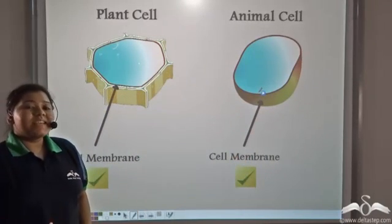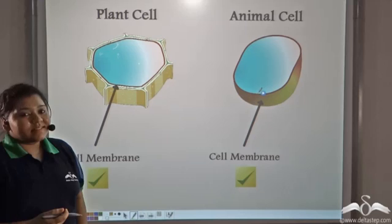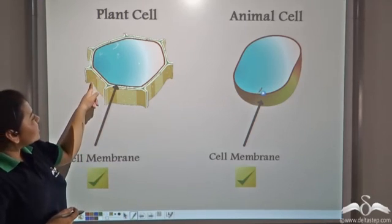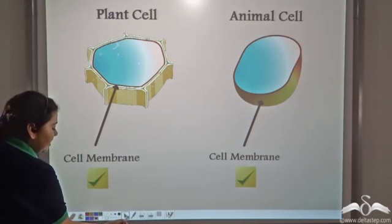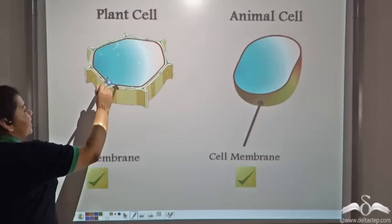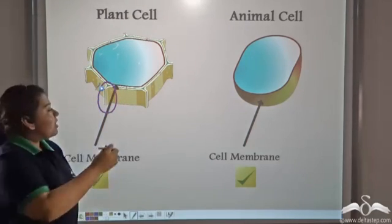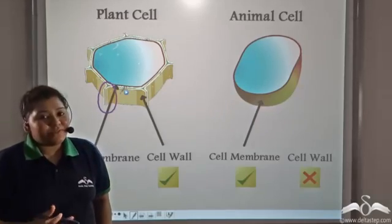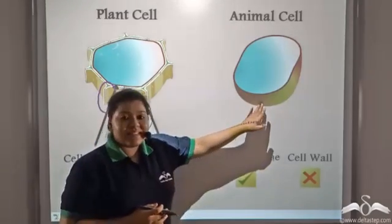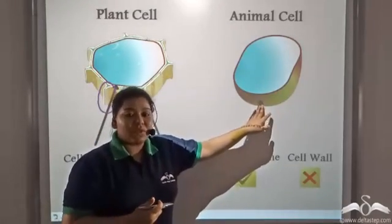Now, if you notice this part is exclusive only to the plant cell. So, plant cell contains a cell wall but an animal cell lacks a cell wall.